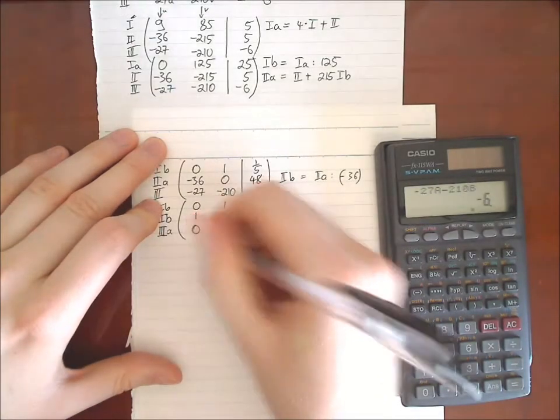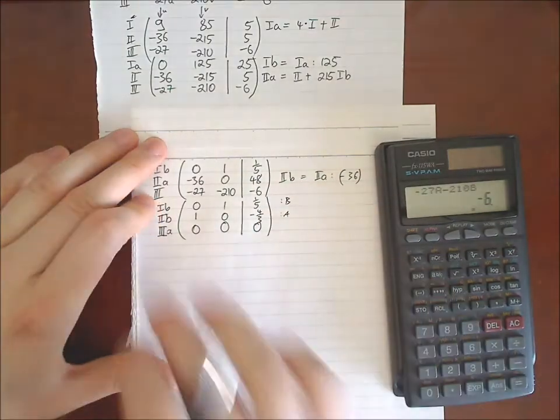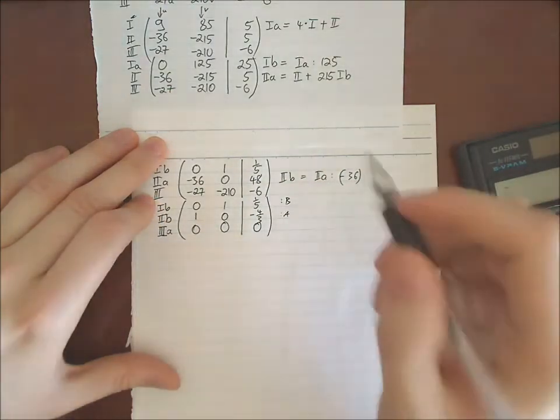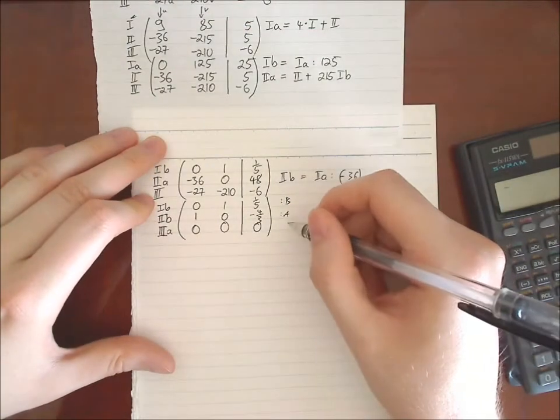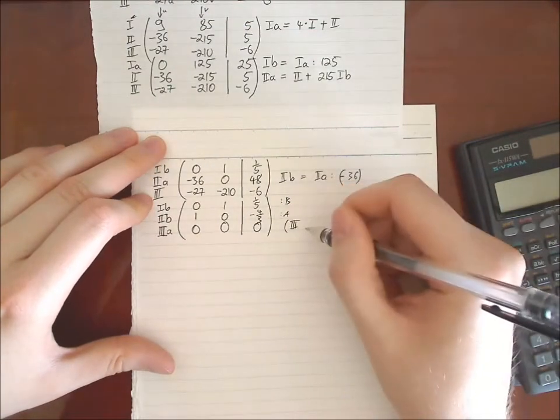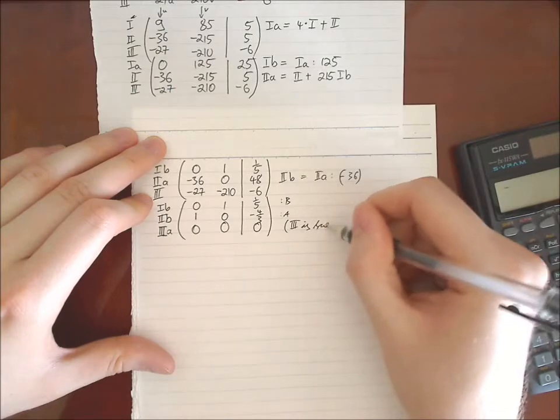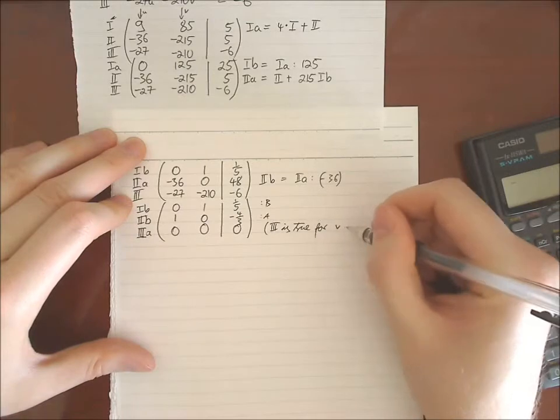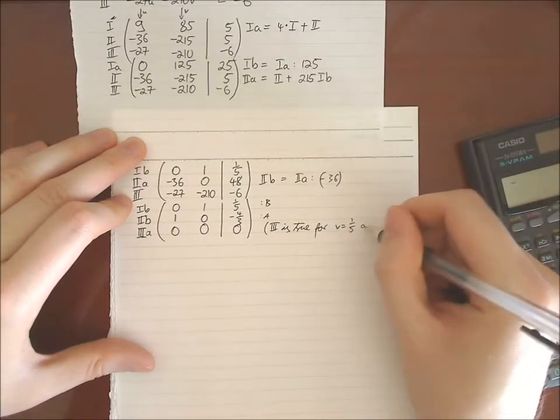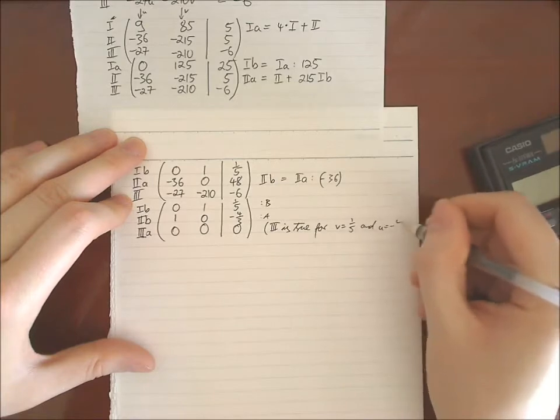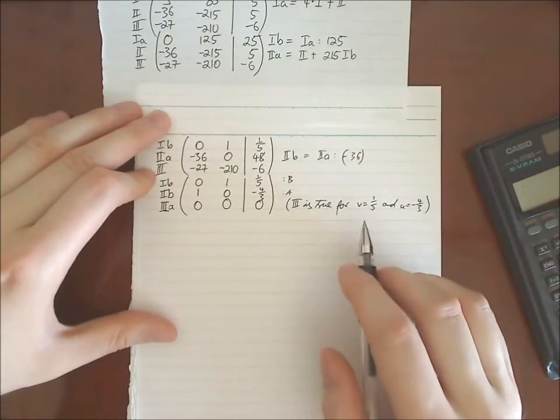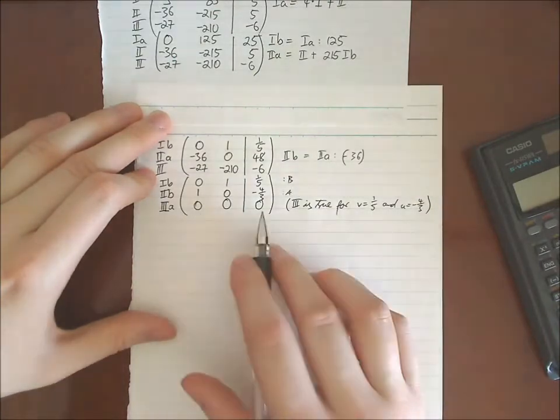So I can write this 0, 0, 0. I don't need the third line anymore. Maybe you can write something like 3 is true for v equals 1 fifth and u equals minus 4 thirds. Maybe you write something like this, so that your teacher knows what you thought and why you just wrote zeros.